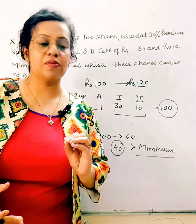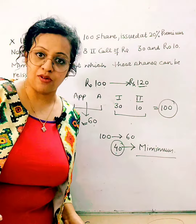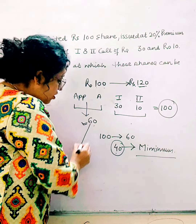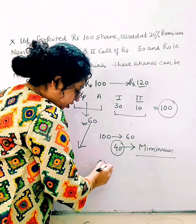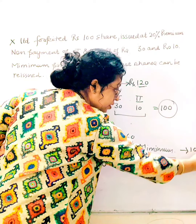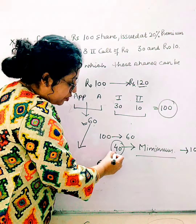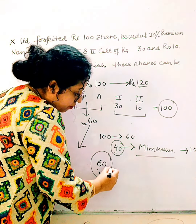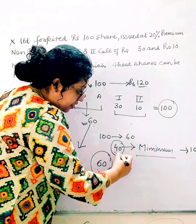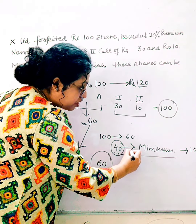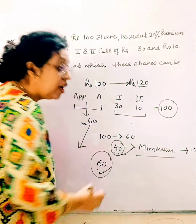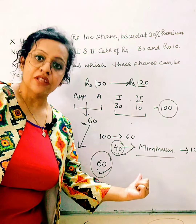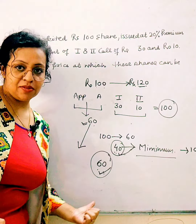One more question often asked is about the maximum discount. How much discount can you give? Since you received 60 rupees and the face value is 100 rupees, the maximum discount you can give is 40 rupees — so you can re-issue at a minimum of 60 rupees. MCQ questions ask either the maximum discount or the minimum re-issue price — these are the two key figures.